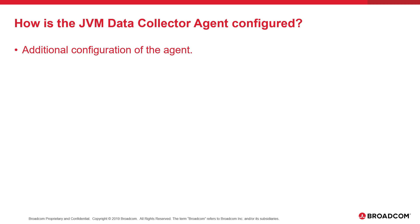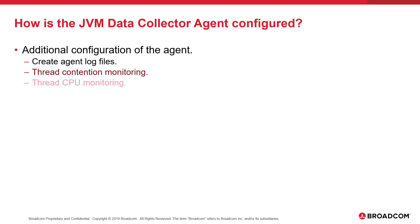There is more configuration that will not be covered in detail in this video, but documentation is available should it be required. The JVM Data Collector Agent can create log files for diagnostic purposes — this is off by default and typically only turned on at the direction of a support engineer. The agent can also display thread contention information and thread CPU usage information, provided the respective JVM monitoring options are enabled. The agent defaults to connect to a SysView with a subsystem ID of GSVX; if your installation uses a non-default subsystem ID, the agent's subsystem ID will need to be updated.